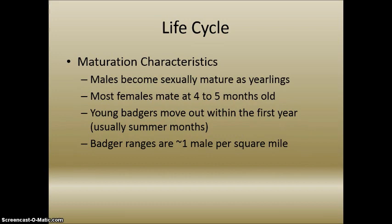Regarding maturation, males generally become sexually mature as yearlings, but females are most often found to mate around four to five months old. Young badgers move out within the first year, usually in the summer months, and occupy a space of approximately one male per square mile. They are a rather prolific species in North America, mostly due to the quantity of cubs generated from each mating cycle.